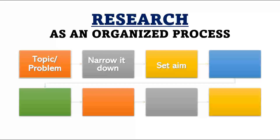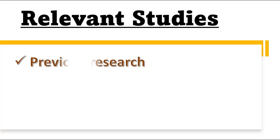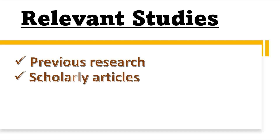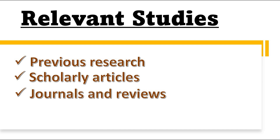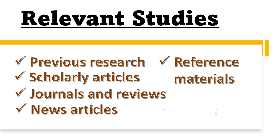Next in line is to find relevant studies. It is very essential that we read other studies, research, and articles about our chosen topic so that we may have a basis and gain more evidence to support our claim and belief. Examples of where we may get relevant information include previous research, scholarly articles, journals and reviews, news articles, reference materials, and books.